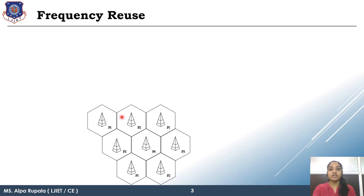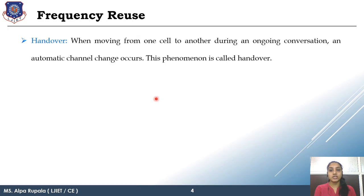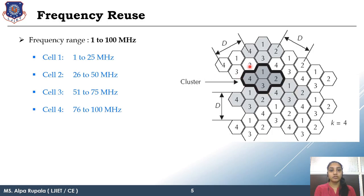Each and every base station has some amount of frequency range to transmit and receive, and that frequency range needs to be reused according to some specified distance. Now, if we talk about frequency reuse in a cellular network, this is your geographical area subdivided into small parts — hexagonal cells.